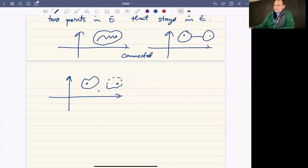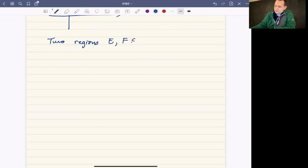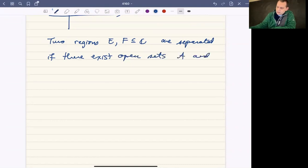So formally, two regions, E and F, which are worth thinking of as subsets of the complex numbers, are separated if there exist open sets A and B, so that A and B are disjoint.